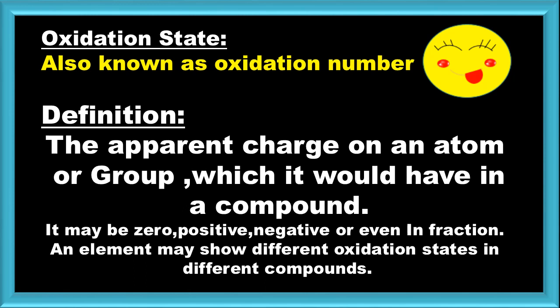Oxidation state is also known as oxidation number. In any compound, we have the charge of an atom or group of atoms — this is the oxidation number or oxidation state. This charge may be zero, positive, negative, or a fraction. It is not necessary that any element in any compound will have the same oxidation number.